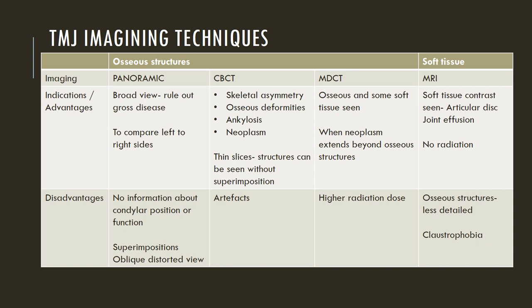The indications or advantages of a panoramic view include its broad view to rule out any gross disease, as well as good comparison of the left and right sides in the same image. The disadvantage of a panoramic image is that it does not give any information on condylar position or function. Moreover, there are superimpositions from the base of the skull and other areas, which can result in an oblique, distorted view of the TMJ.